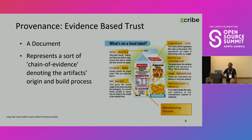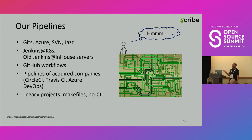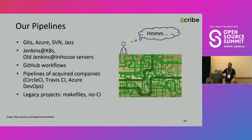After understanding a little bit about SALSA, I started to consider our pipelines. As a large organization, we have many diverse pipeline technologies. We have source control management of Gits of various kinds, Azure DevOps, SVN, whoever remembers Jazz — and that's only a partial list. For build systems we have many: Jenkins over Kubernetes as a main tool, but we still have Jenkins over in-house servers and other pipeline technologies, either from old projects or from companies acquired along with their whole technology stack — and of course also legacy projects with no CI.